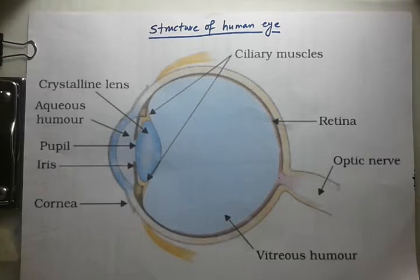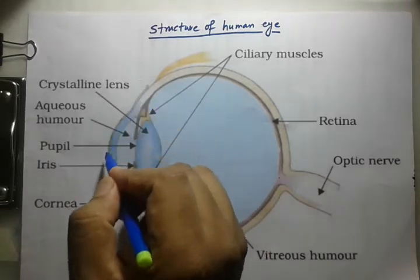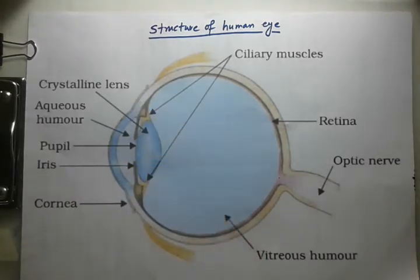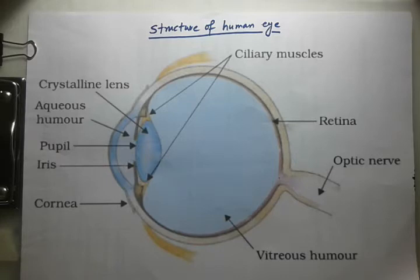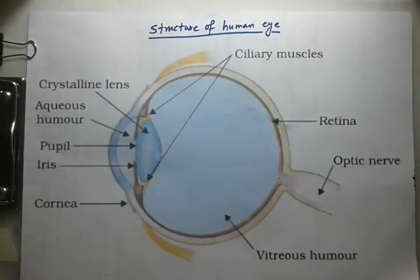Now we study the structure of the human eye. You can see the diagram here. Starting from the cornea — this layer here is known as the cornea. Light enters the eye through a thin membrane called the cornea, which covers the transparent bulge on the front portion of the eyeball.